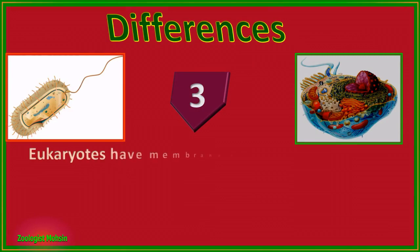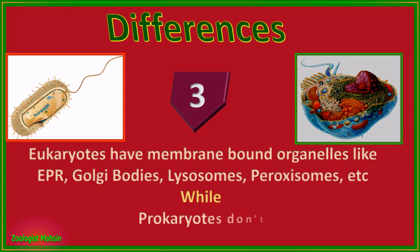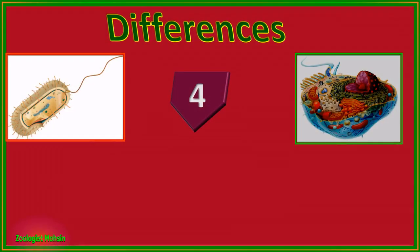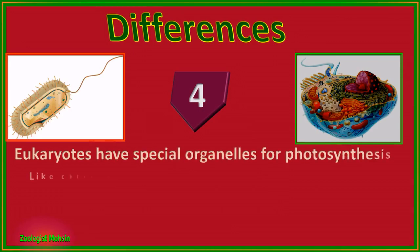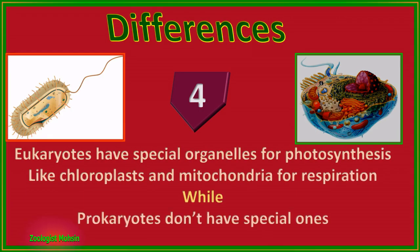Number two: eukaryotes have complex chromosomes with histones, capable of condensing into mitotic structures, while prokaryotes have only one single chromosome. Number three: eukaryotes have membrane-bound organelles like endoplasmic reticulum, Golgi bodies, lysosomes, peroxisomes, etc., while prokaryotes don't have such organelles.